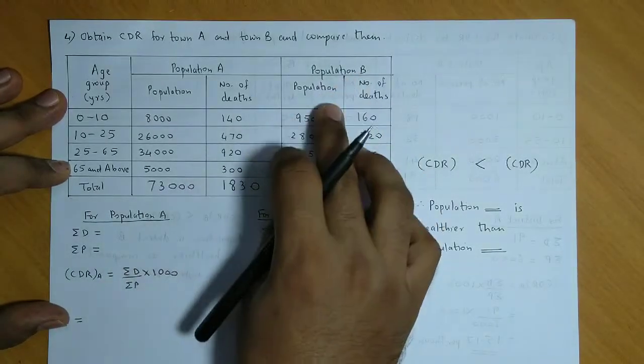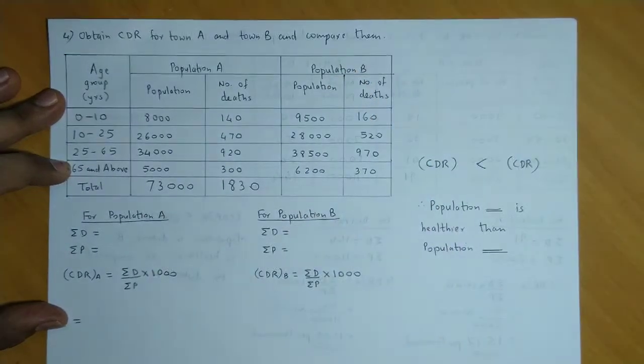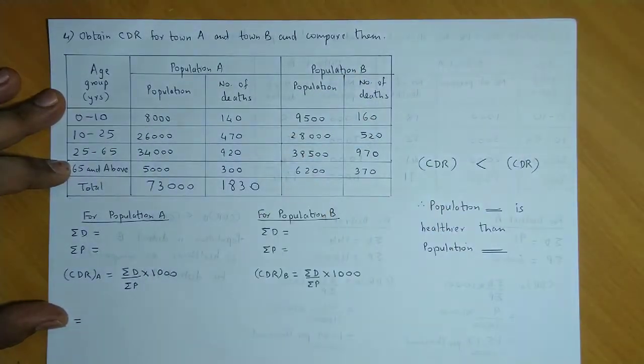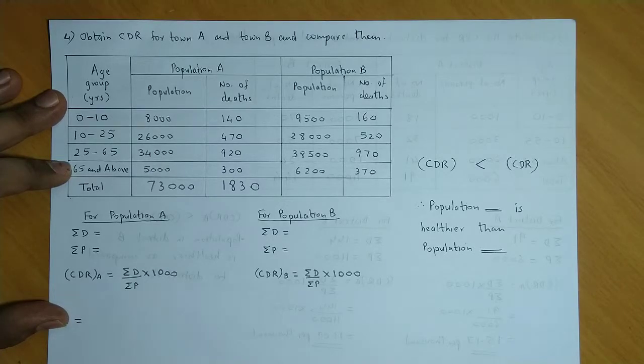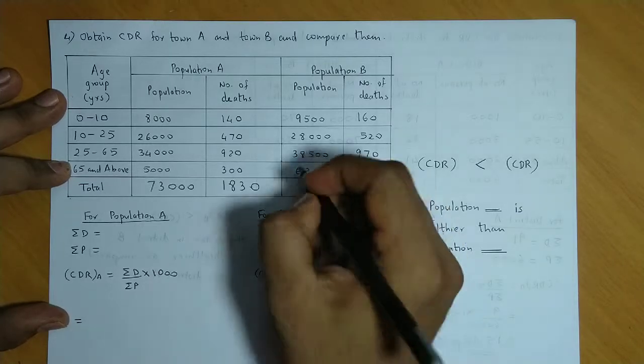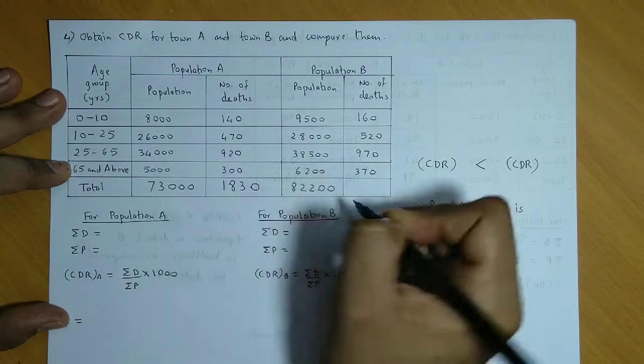Likewise, we will add the population and number of deaths for B. So let us add the population. So we get 9,500 plus 28,000 plus 38,500 plus 6,200. So 82,200.